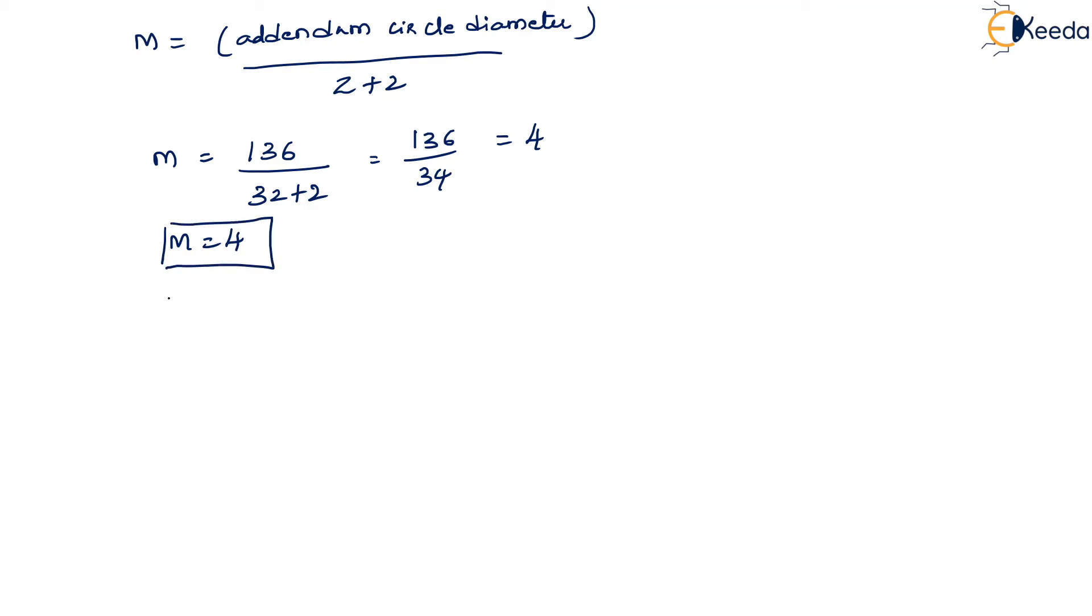So now we substitute in the theoretical span width formula. W3 trial can be written as 32, that is the number of teeth, into 4, that is the module, cos of 20, that is the pressure angle, times [pi 3 divided by 32 minus pi by 2 times 32].